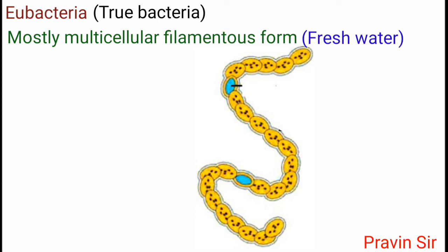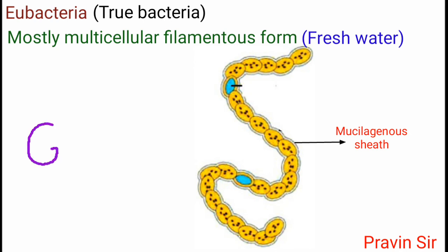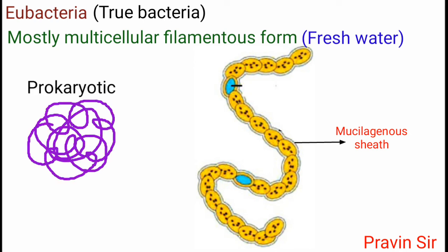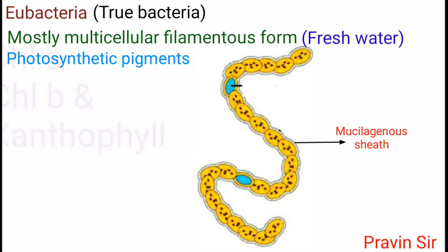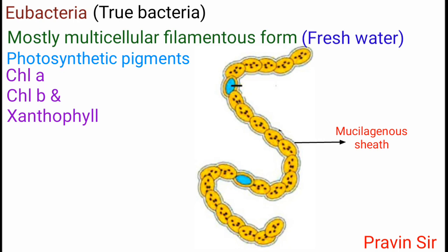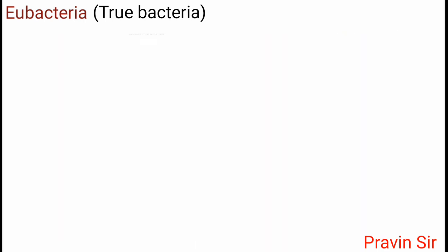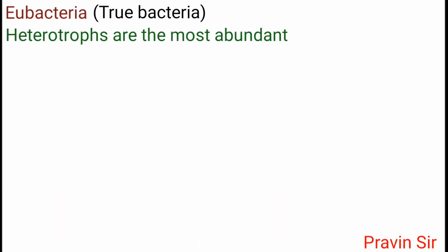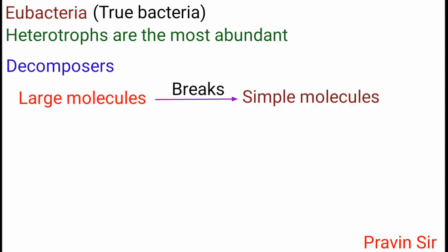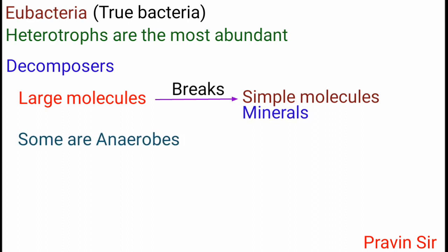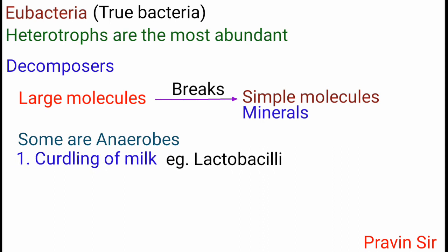Cyanobacteria are mostly multicellular filamentous forms that live in fresh water and their body is covered by a mucilaginous sheet. Genetic material is typically prokaryotic. Photosynthetic pigments are chlorophyll-a, chlorophyll-b, and xanthophyll. The heterocyst is present, which helps in nitrogen fixation.